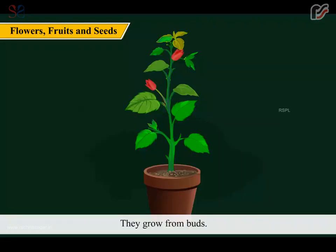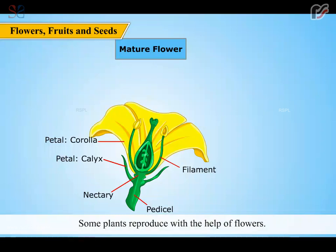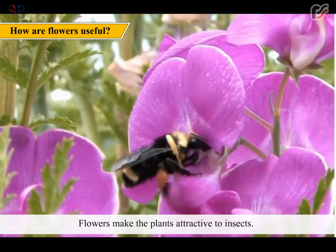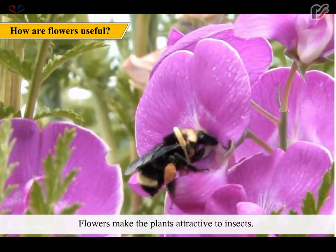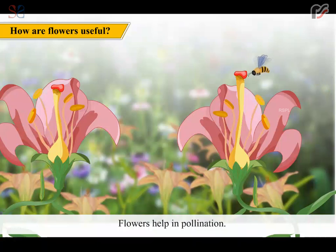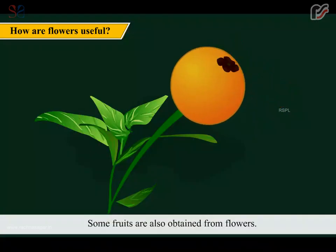Many plants bear flowers. They grow from buds. These flowers make plants beautiful. Some plants reproduce with the help of flowers. Flowers make the plants attractive to insects. Perfume is obtained from many flowers. Flowers help in pollination. Some fruits are also obtained from flowers.